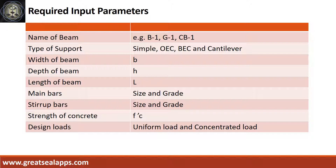Input parameters include type of support, width of beam, depth of beam, length of beam, main bars with size and grade, stirrup bars with size and grade, strength of concrete, and design loads — which include uniform load and concentrated load.